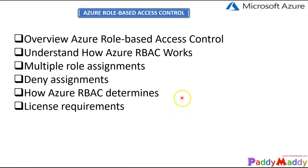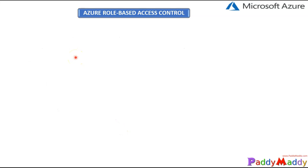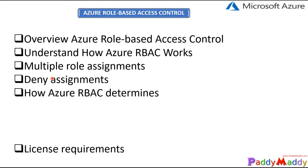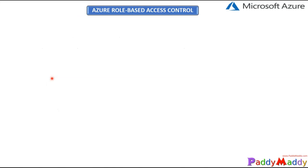That will conclude with licensing requirements. So, what is role-based access control, or Azure RBAC? Access management for cloud resources is a critical function for any organization using cloud services. By using Azure role-based access control, it will help you manage who has access to what Azure resources, what they can do with those resources, what areas they have access to, and it can give you granular access.